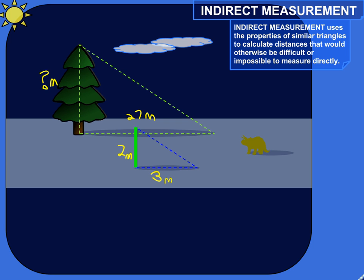Indirect measurement uses the properties of similar triangles to calculate distances that would otherwise be difficult or impossible to measure directly.